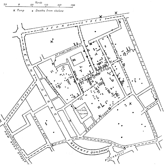Geographically weighted regression is a local version of spatial regression that generates parameters disaggregated by the spatial units of analysis. This allows assessment of the spatial heterogeneity in the estimated relationships between the independent and dependent variables. The use of Bayesian hierarchical modeling in conjunction with Markov chain Monte Carlo methods have recently shown to be effective in modeling complex relationships using Poisson-gamma-CAR, Poisson-lognormal-SAR, or over-dispersed-logit models.